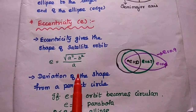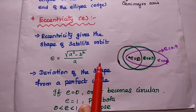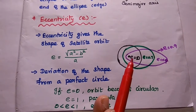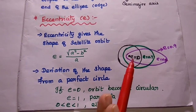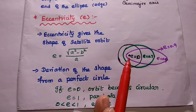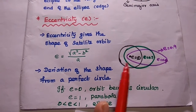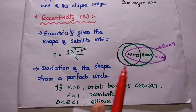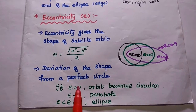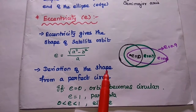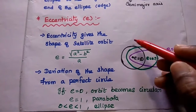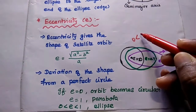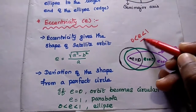When the eccentricity value is between 0 and 1, the orbit is an elliptical path. If eccentricity equals 0, it is a circular path. If the value equals 1, it becomes a parabola. If the value is greater than 0 and less than 1, it is an elliptical path. For satellite communication, the elliptical path has an eccentricity value greater than 0 and less than 1.